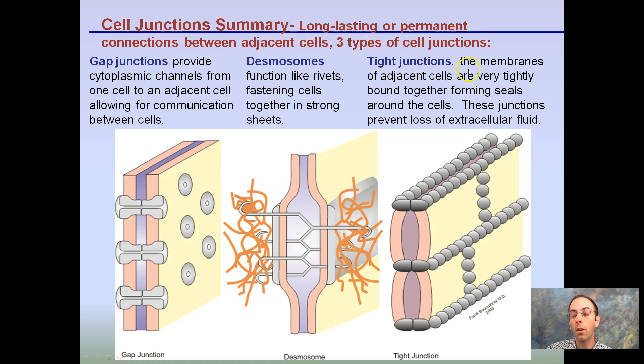And our tight junctions, membranes of adjacent cells that are very tightly bonded together, forming seals around the cell. These are some examples of the three main types of cell junctions.